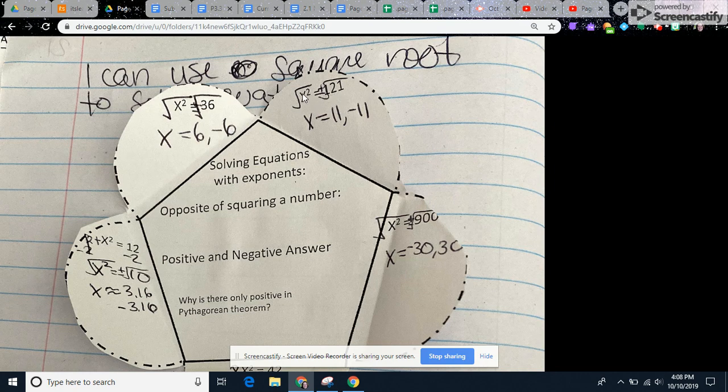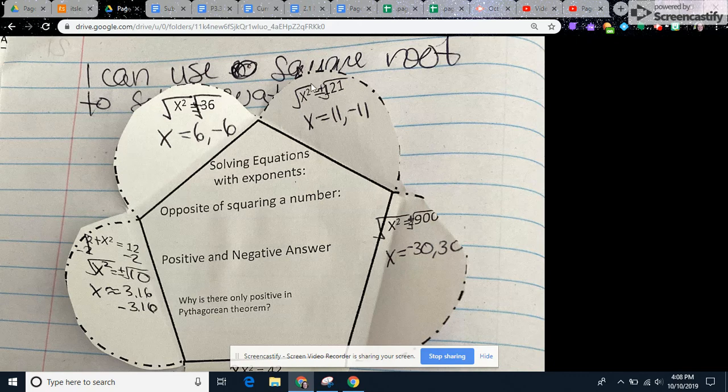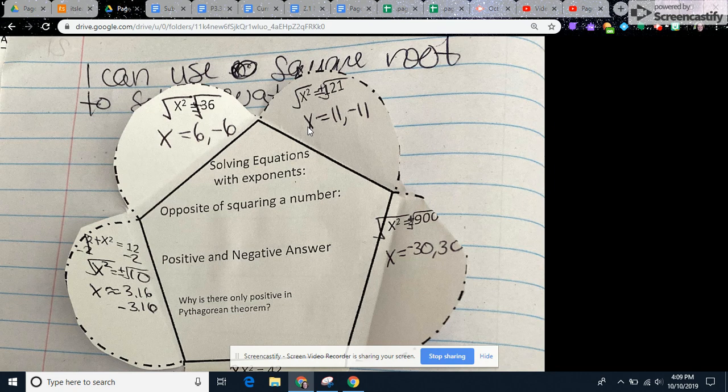Over here, we have x squared equals 121. You can see the plus and minus sign a lot better on this one. So what's the opposite of squaring a number? Square root your number. So the square root of x squared will bring you down to x, and that's the goal of every equation is to get the variable by itself. Over here, when you take the square root of 121, what times itself gives you 121? 11 and negative 11. Negative 11 times negative 11 is a positive 121.